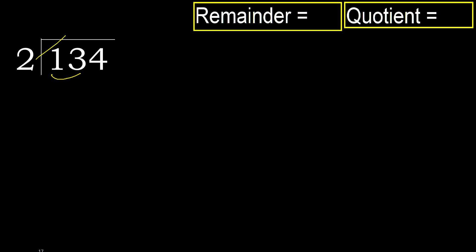2 multiplied by which number is nearest to 13, but not greater? 2 multiply by 7 is 14 — that's greater. Multiply by 6 is 12, it's not greater. Subtract: 1. Next.